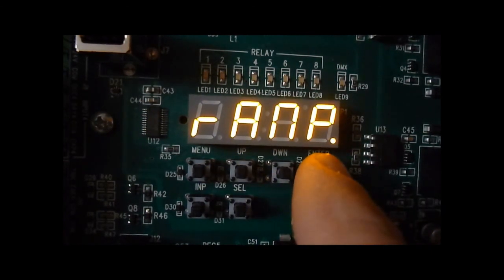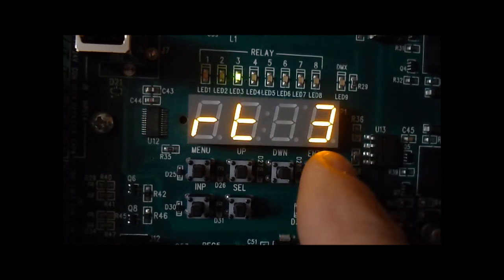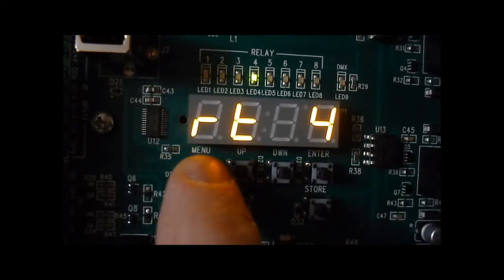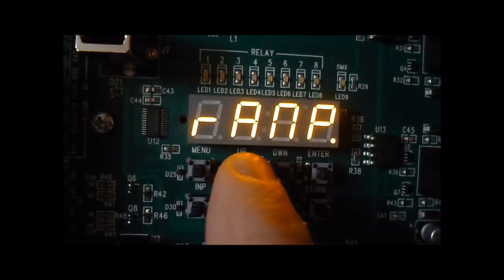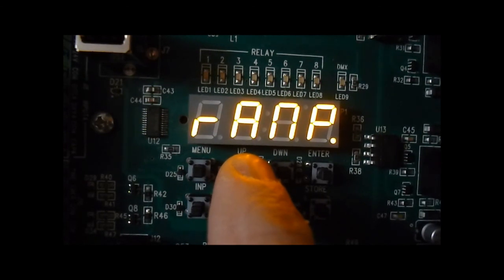The next menu item is a ramp test. Press enter. The unit will chase through all the zones on the relay panel, ramping up each time. Just press menu to exit, and any relay settings that were being controlled by other inputs will return back to control to those inputs.